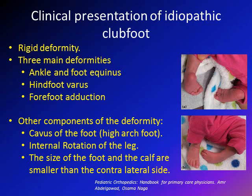To summarize: three main deformities are ankle and foot equinus, hindfoot varus, and forefoot adduction. Three additional deformities are cavus of the foot, internal rotation of the whole leg, and smaller size of the foot and leg compared to the contralateral side.